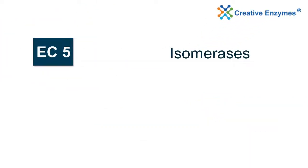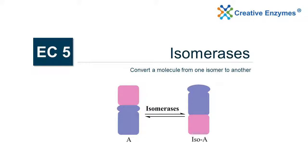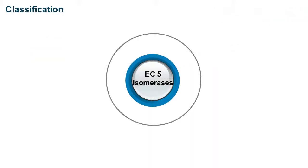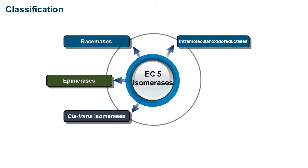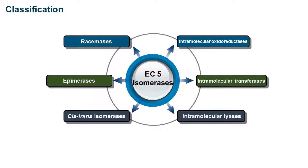EC5 — Isomerases. Isomerases convert a molecule from one isomer to another. The reaction is shown below. Isomerases are further classified into racemases, epimerases, cis-trans isomerases, intramolecular oxidoreductases, intramolecular transferases, and intramolecular lyases.